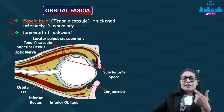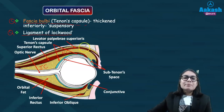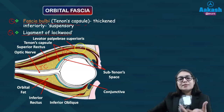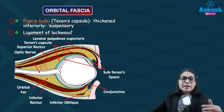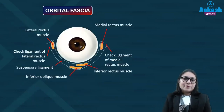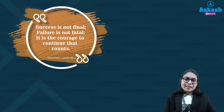So we have seen the subtenon space, the intraconal space, and the extraconal space. There will also be a space between the periorbita and your orbital bone, which is your subperiosteal space. These four spaces are where any sort of mass or tumour can develop and cause further pathologies. That's all from the anatomy of the orbit — the ligament of Lockwood is also known as the suspensory ligament. Thank you.